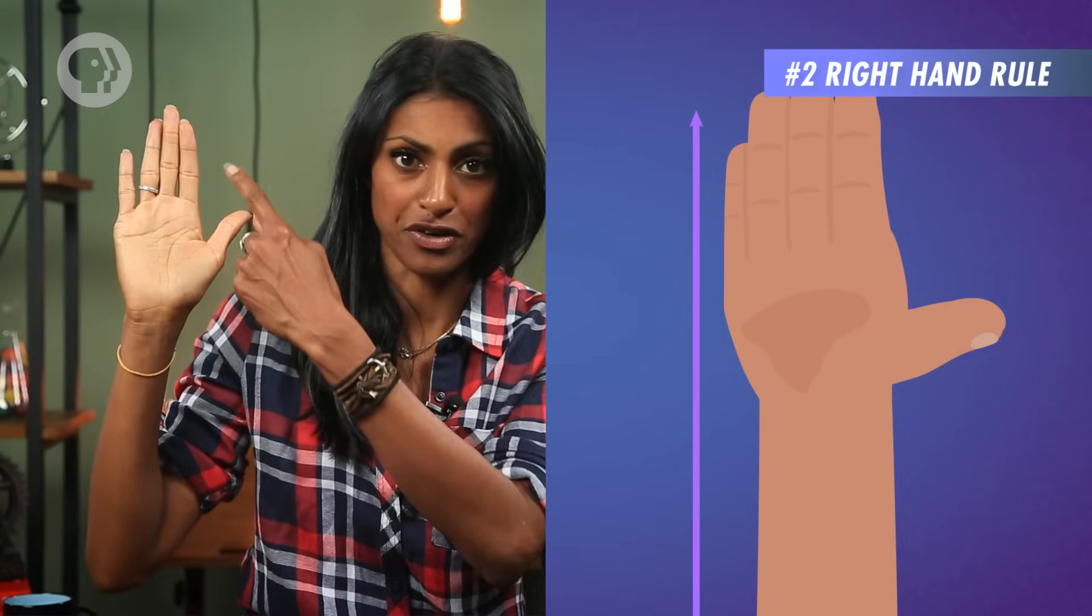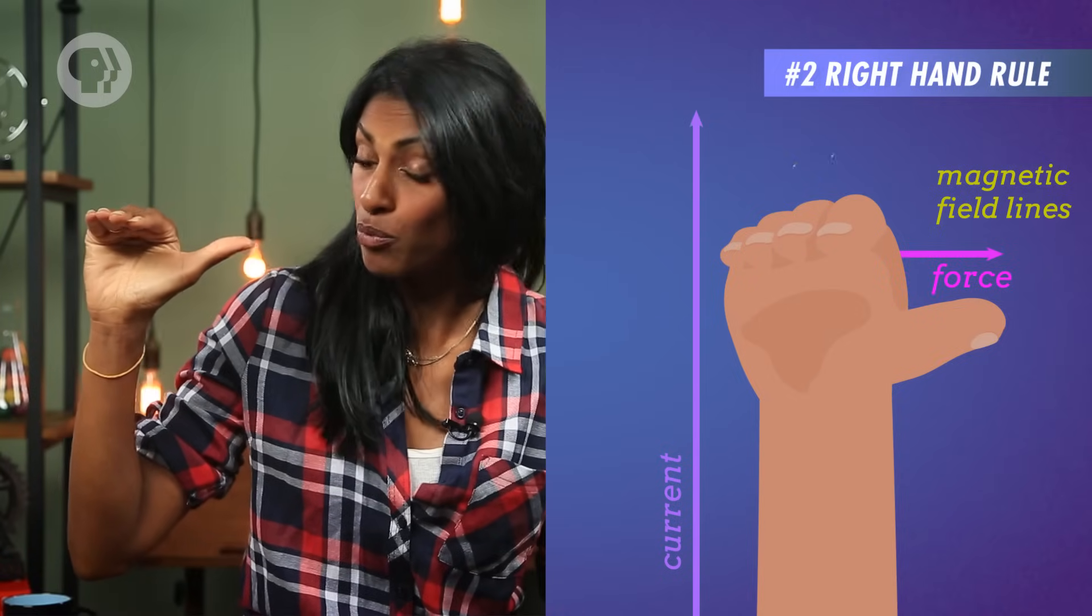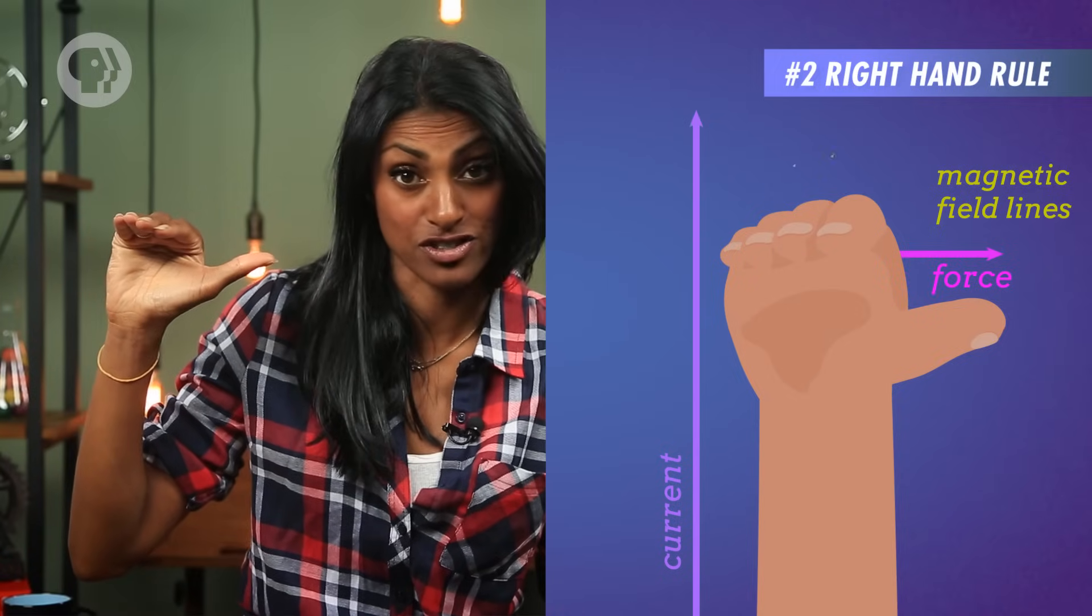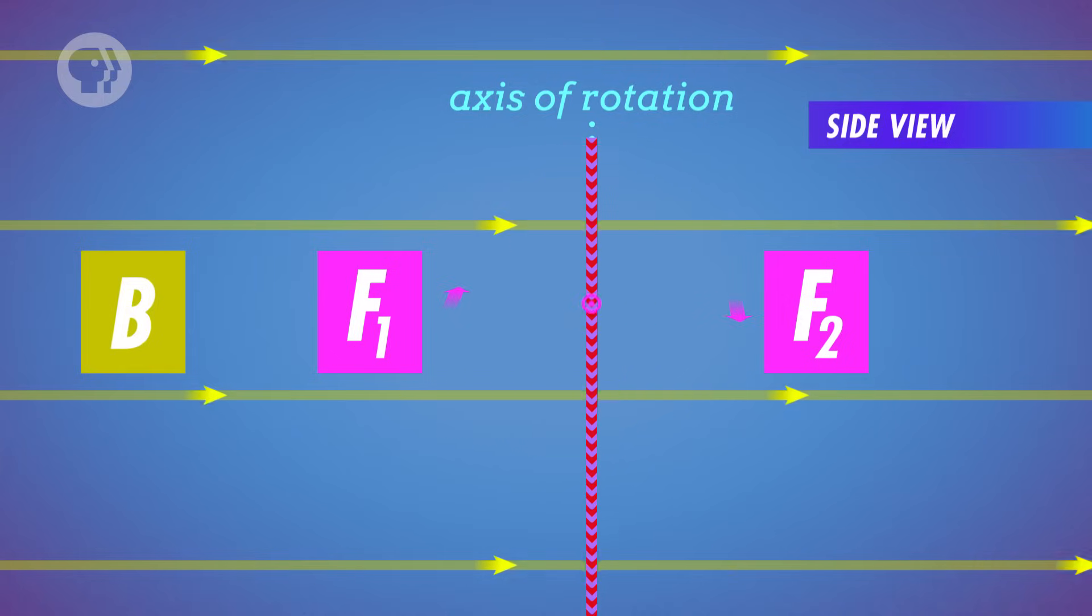And we can use the second right-hand rule to figure out the direction of that force. If you point your hand in the direction of the current, then bend your fingers in the direction of the magnetic field, your thumb will point in the direction of the force. Which turns out to be away from you, for the left-hand side of the coil, and towards you for the right-hand side.